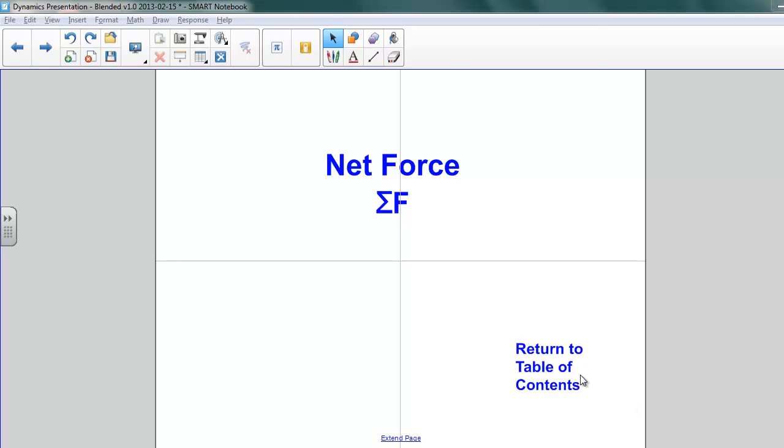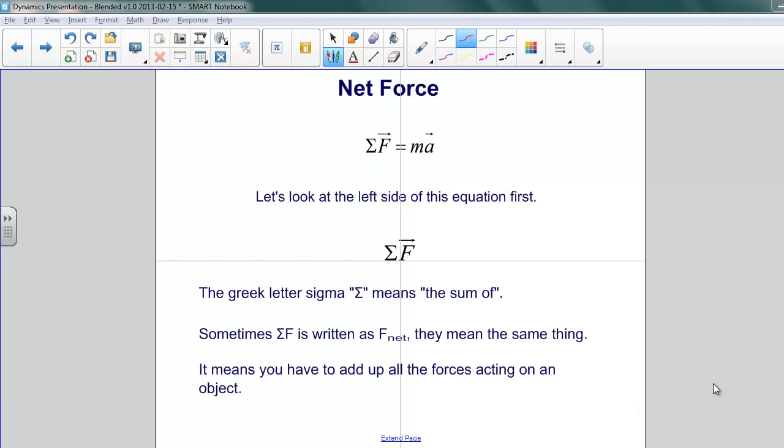The net force. Now let's look at the net force itself. We're going to look at the left side of Newton's second law, the sigma F. The Greek letter sigma means sum of. Sometimes sigma F is written as F net, just to say that it's the net force. They mean the same thing. It means that you have to add up all the forces acting on the object.